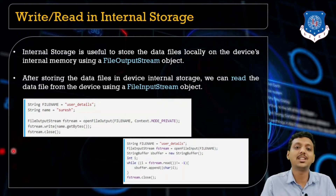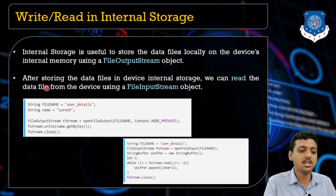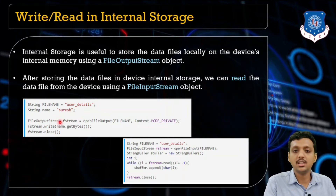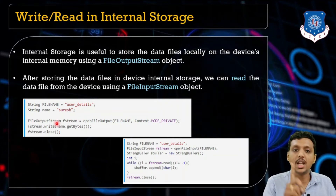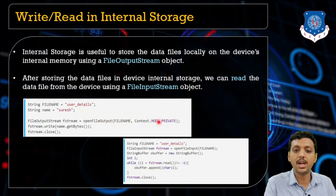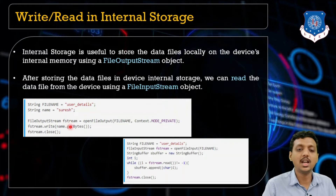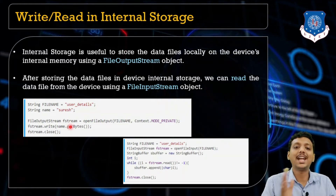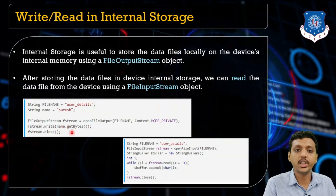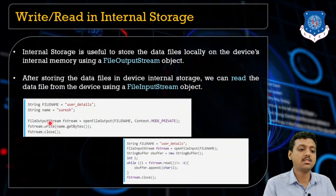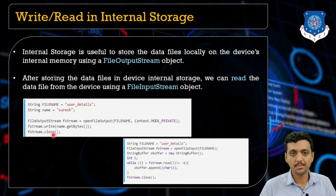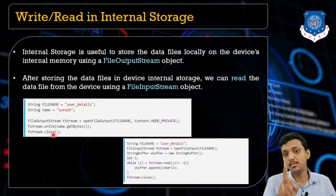Whenever you want to write something to internal storage, you first need to open your file and write the data. To write something you need a FileOutputStream. Use openFileOutput() with the file name and its mode, then write the data by calling the write() method passing getBytes(). Do not forget to convert your string to bytes.